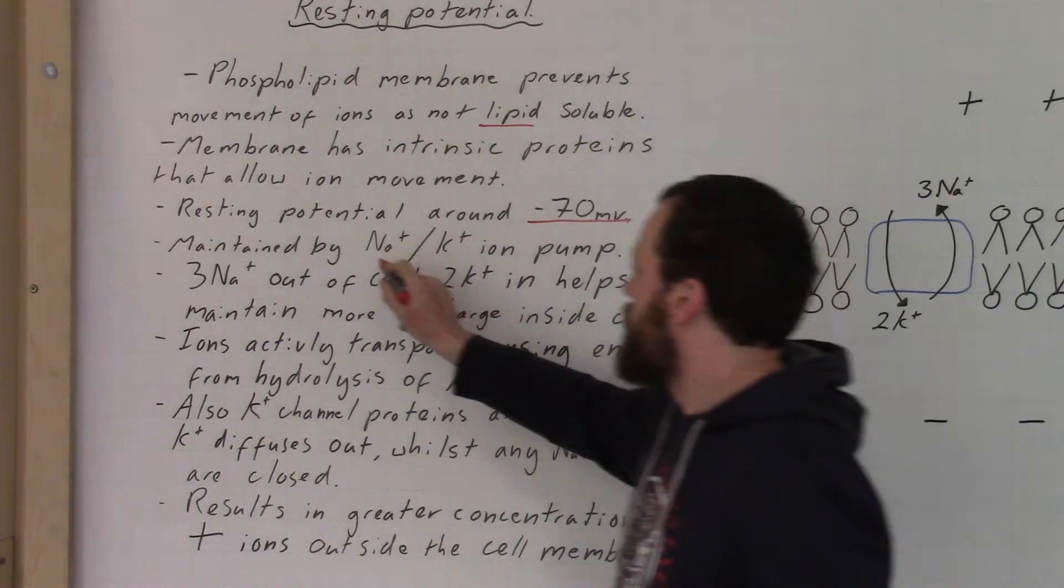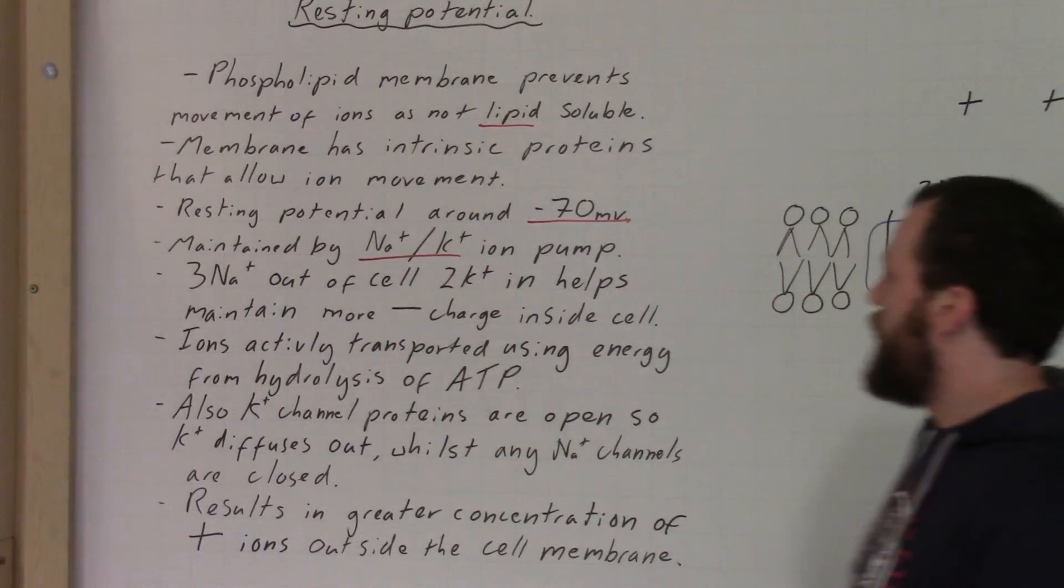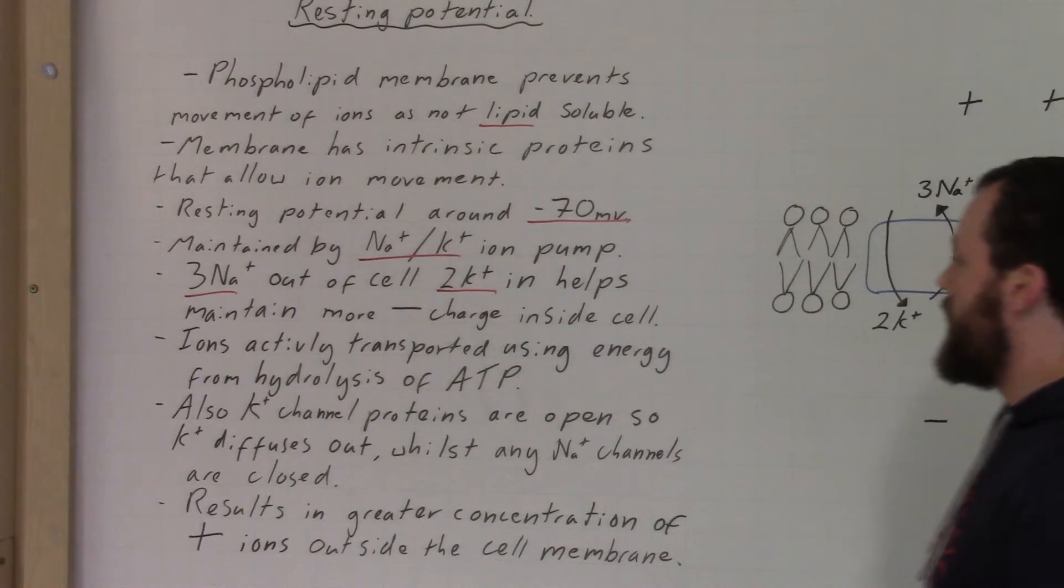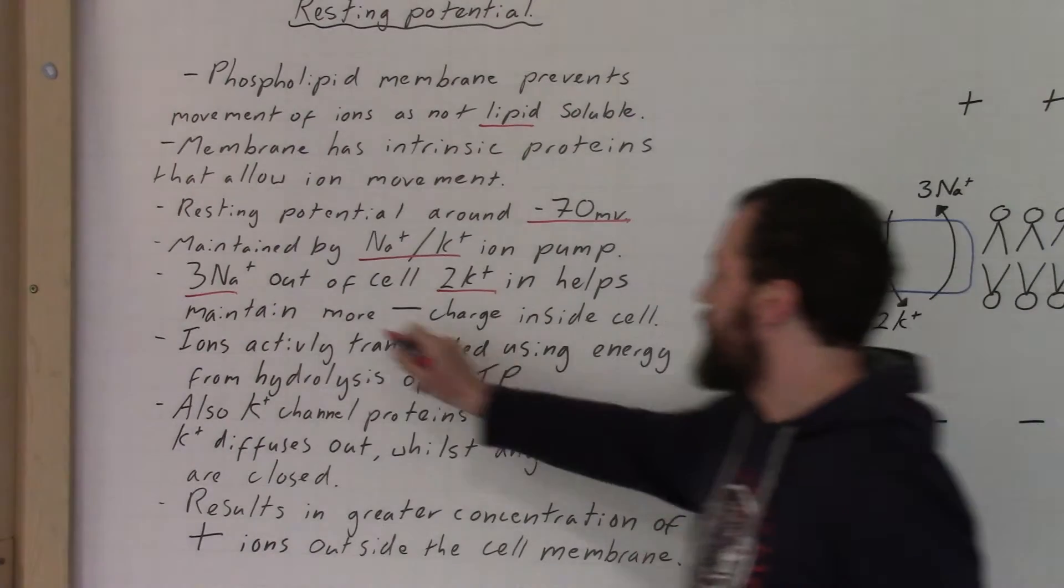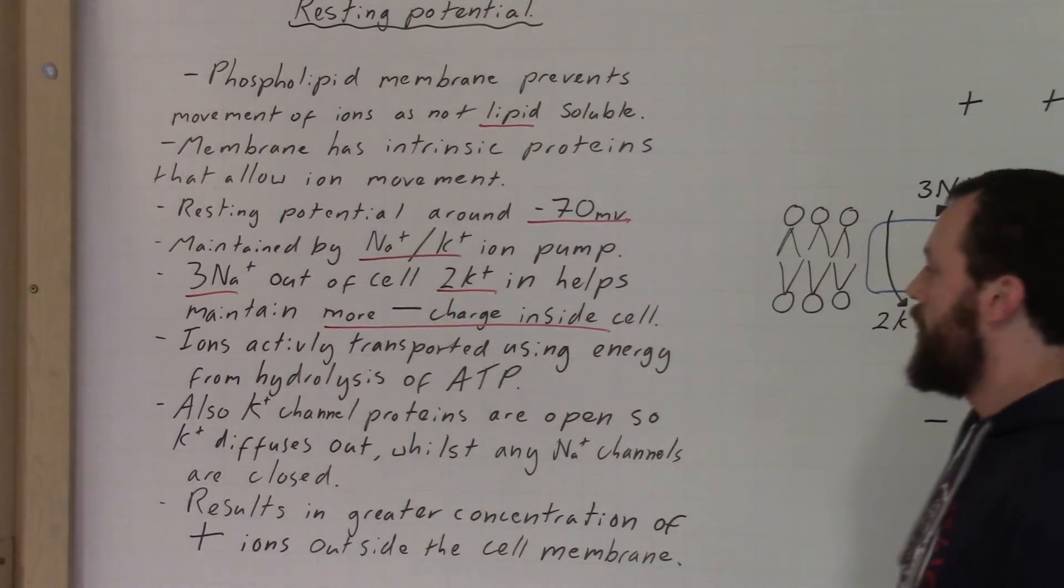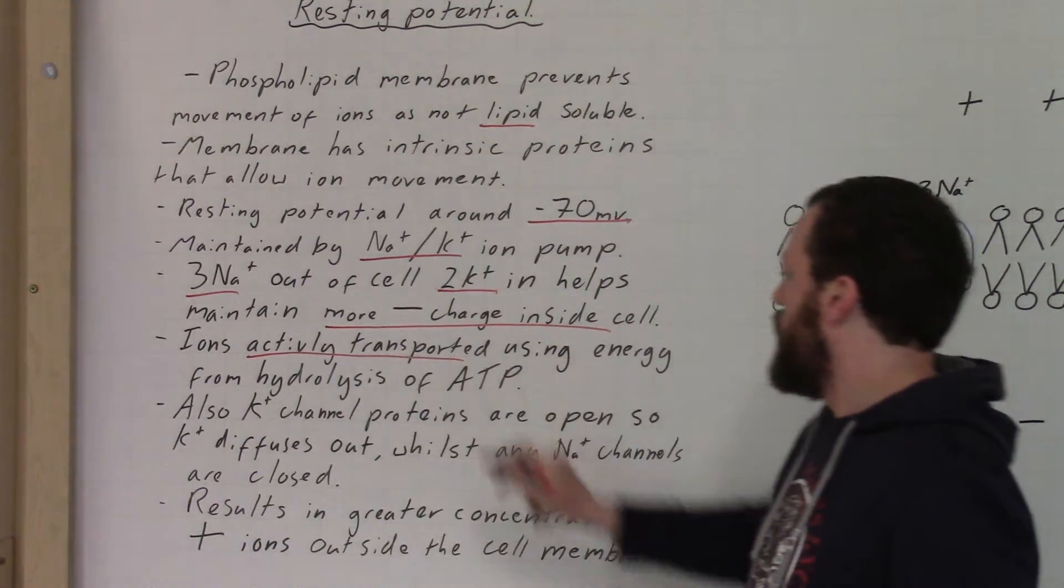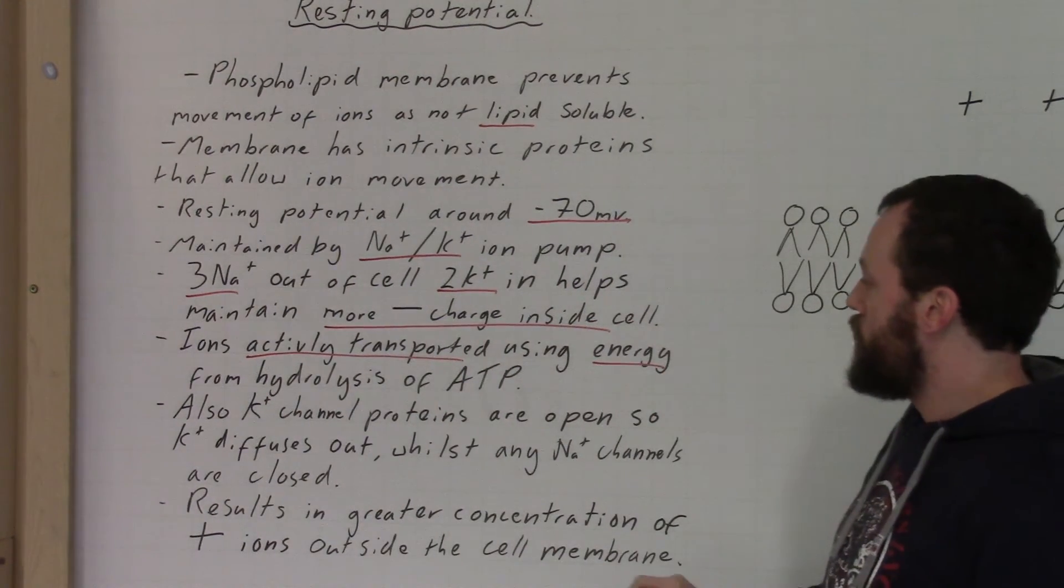We see here that we've got the sodium and potassium ion pump: three sodium out, two potassium in, maintaining this more negative charge on the inside. Make sure you say that it's by active transport and that it uses the energy from the hydrolysis of ATP.